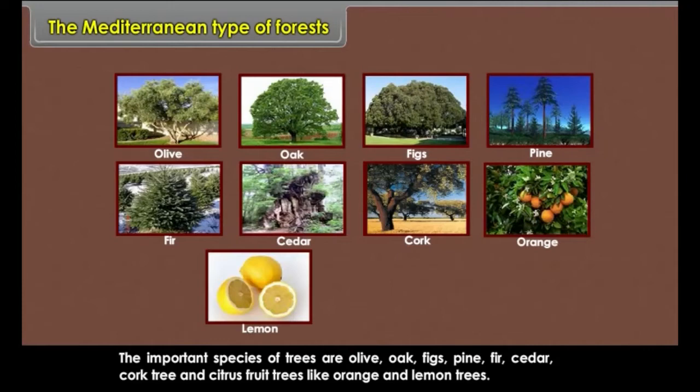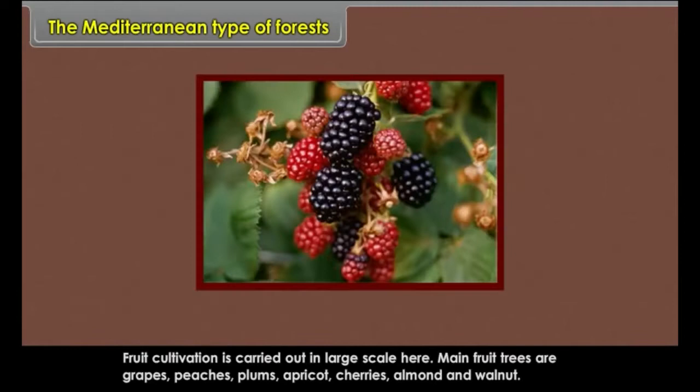Grapes are largely grown in this region and fruit cultivation is carried out on a large scale. Main fruit trees include grapes, peaches, plums, apricot, cherries, almond and walnut.